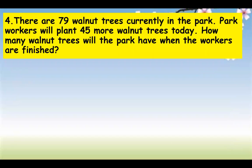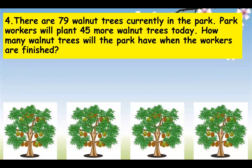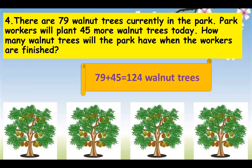There are 79 walnut trees currently in the park. Park workers will plant 45 more walnut trees today. How many walnut trees will the park have when the workers are finished? So 79 plus 45 equals 124 walnut trees.